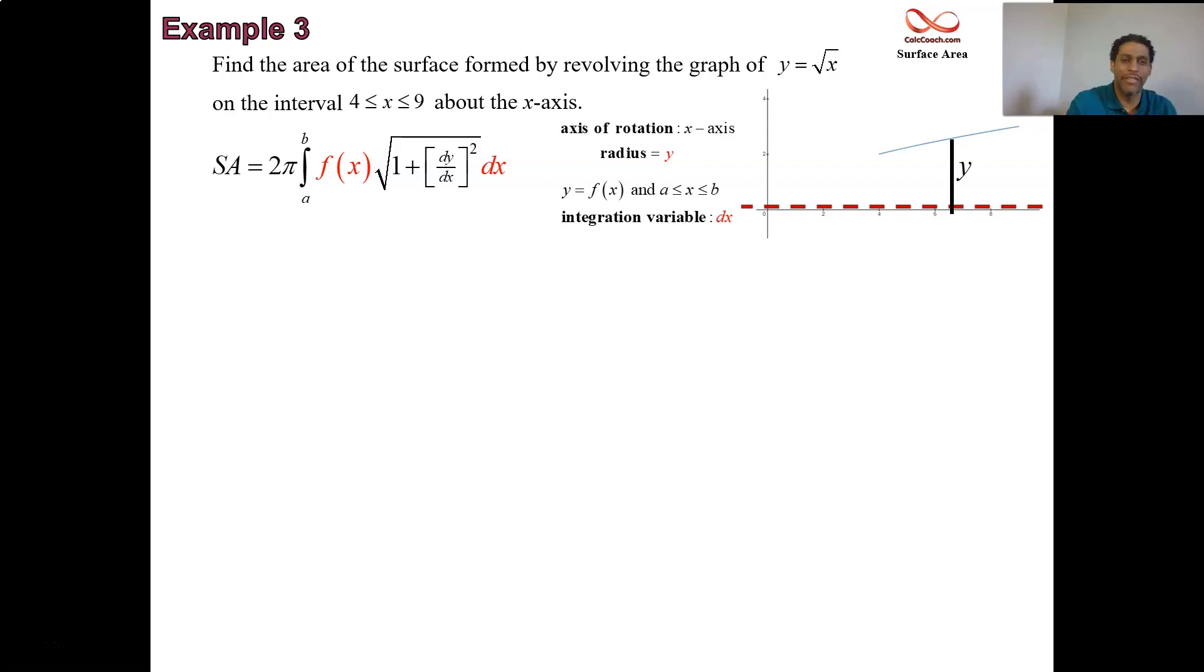We'll take the derivative, we'll square, we'll add one, we'll take a square root. But we've got to remember that f of x is root x. Take the derivative of root x, and you get 1 over 2 root x. Square that, and you get 1 over 4x.